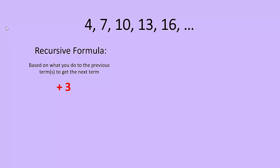The other type of formula is called an explicit formula. An explicit formula is based on the term number. So what we mean by term number is 1 for first term, 2 for second term, and so on.